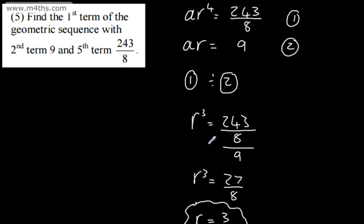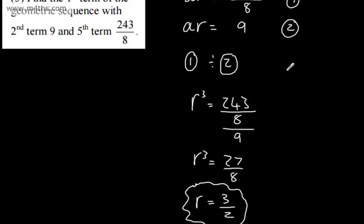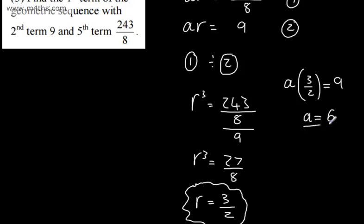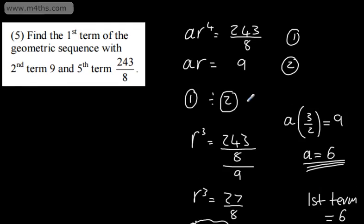So r is equal to 3 over 2, and I can simply substitute that back in to find the value of A. We know that A multiplied by R is equal to 9. Just substituting into equation 2 and dividing by 3 over 2 — or multiplying by 2 over 3 — A is going to be equal to 6. So the first term is equal to 6. All I've done is use my formulae, divided to find one of the unknowns, and substituted back using simultaneous equations to find the first term.